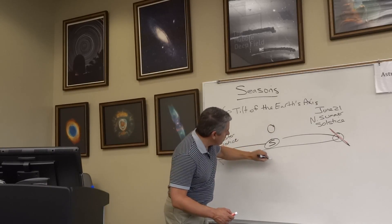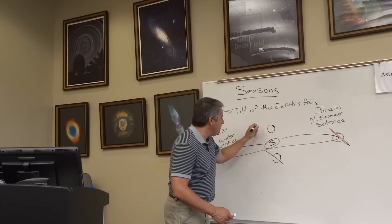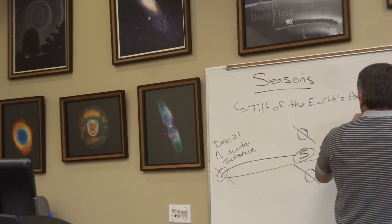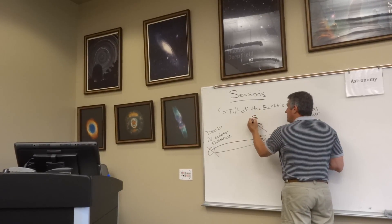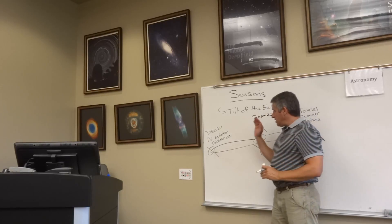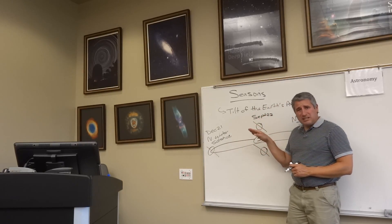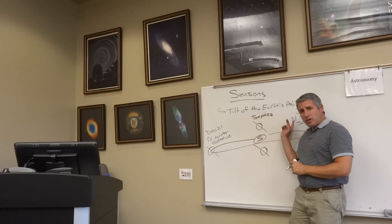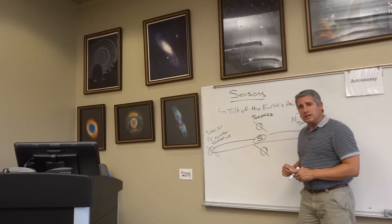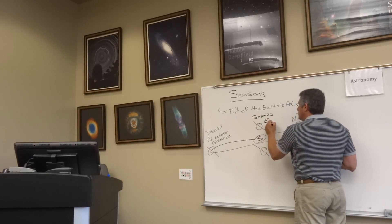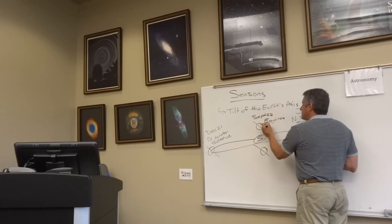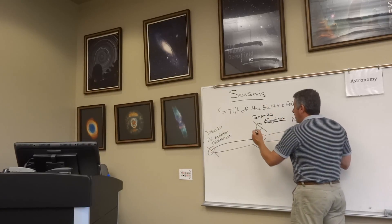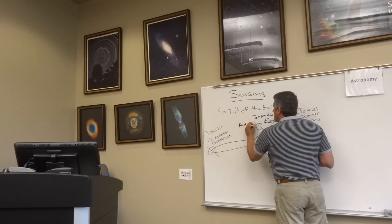What about the other positions in Earth's orbit? The tilt is still the same, so those are called the equinoxes. Moving through June, July, August, September — September 22nd — the tilt of the Earth's axis doesn't really matter in this configuration. We've got not a long summer day or a short winter day, but something exactly in between. We call that, for everybody on Earth, an equinox — equal day and equal night. September 22nd is the autumnal equinox, the first day of fall.